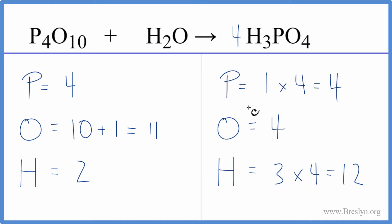That's what we were trying to fix, so the phosphorus atoms are balanced. Then the oxygen, four times four gives us 16 oxygen atoms.